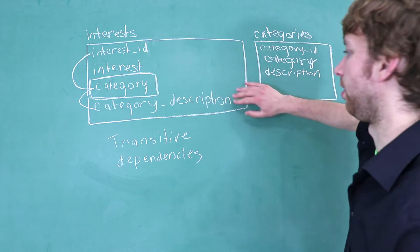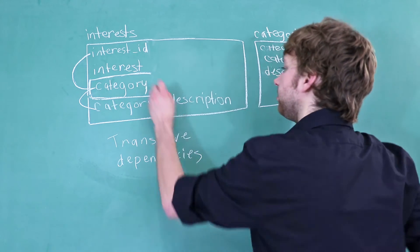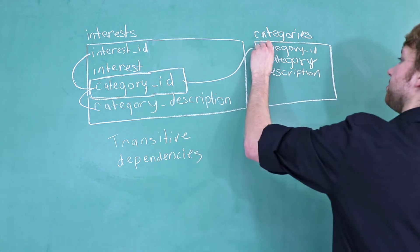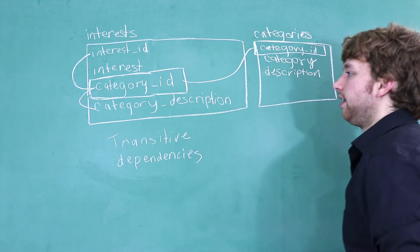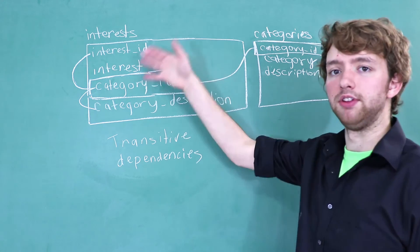But how do we fix this mess over here? What you do is you replace this with a category ID, and that is going to reference this category ID over here. So that's your foreign key reference. Then you're just going to delete this category description because it's not needed in this interest table.